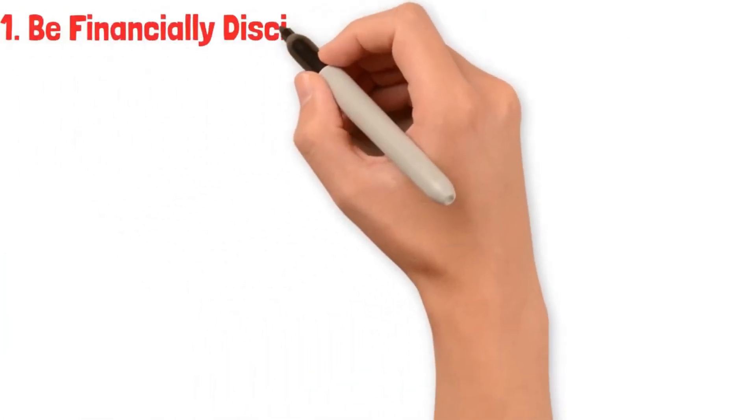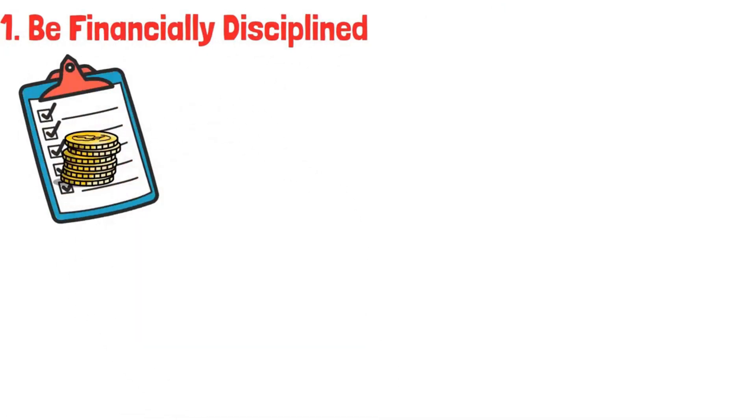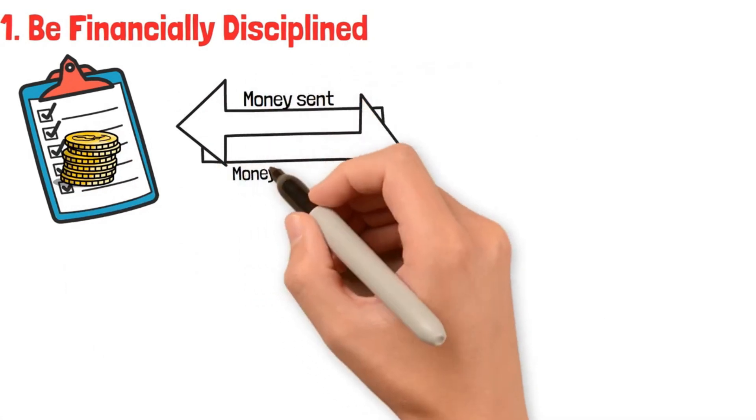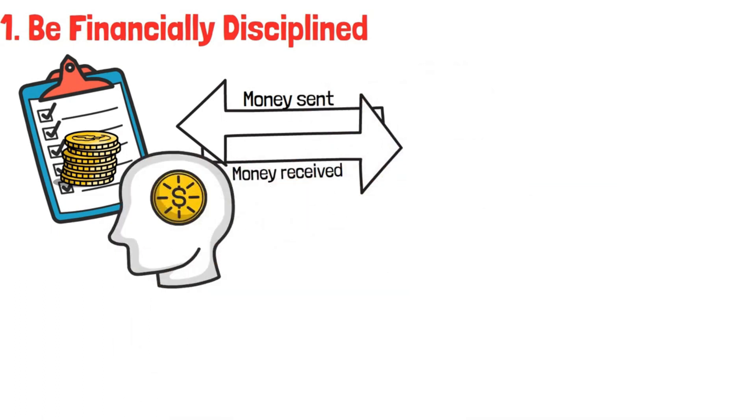1. Be financially disciplined. When you have financial discipline, you control your money. That is, you are aware of how much money is being taken from you and how much you are receiving. Financial discipline means spending and investing your money wisely without high costs. It is having control over your cash.